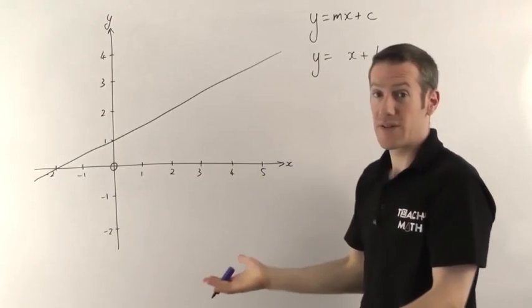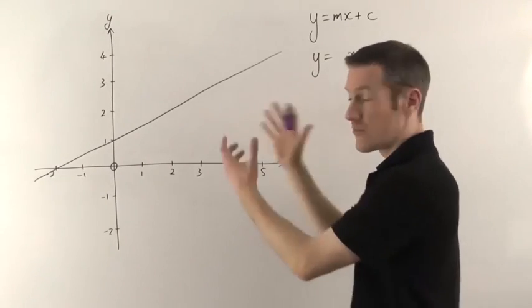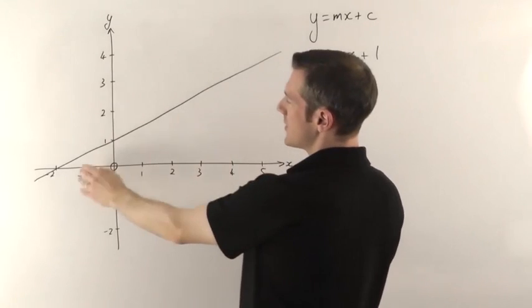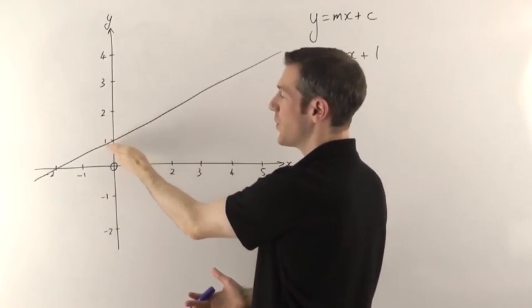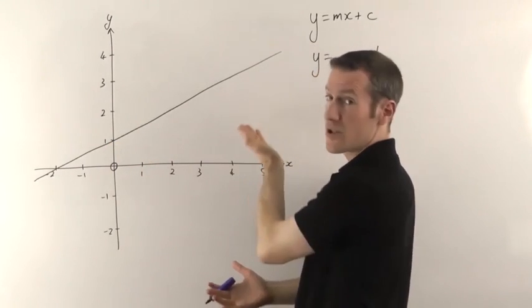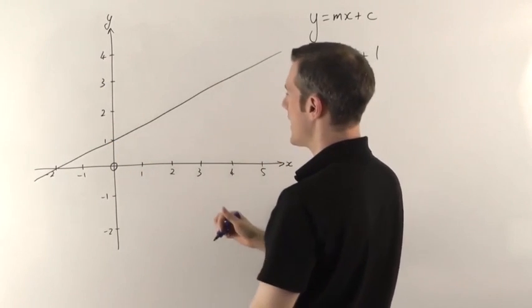So the only other thing we need to find is the gradient. We draw a right angle triangle under the line. Now, where it crosses the y-axis, I like to start there—that's a good point to have the bottom of your right angle triangle. I usually want to make it fairly big; the bigger it is, generally the more accurate it will be.